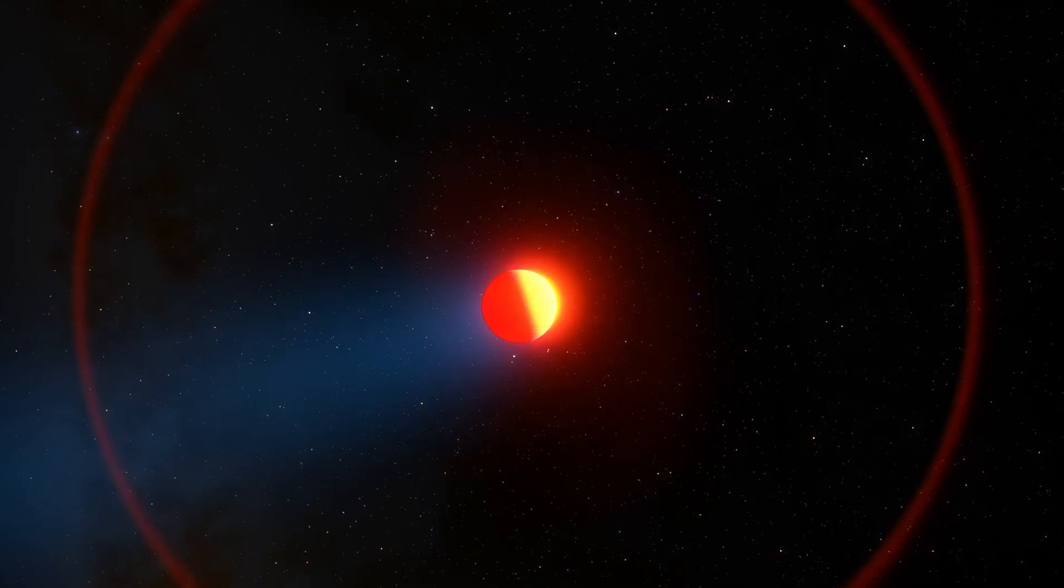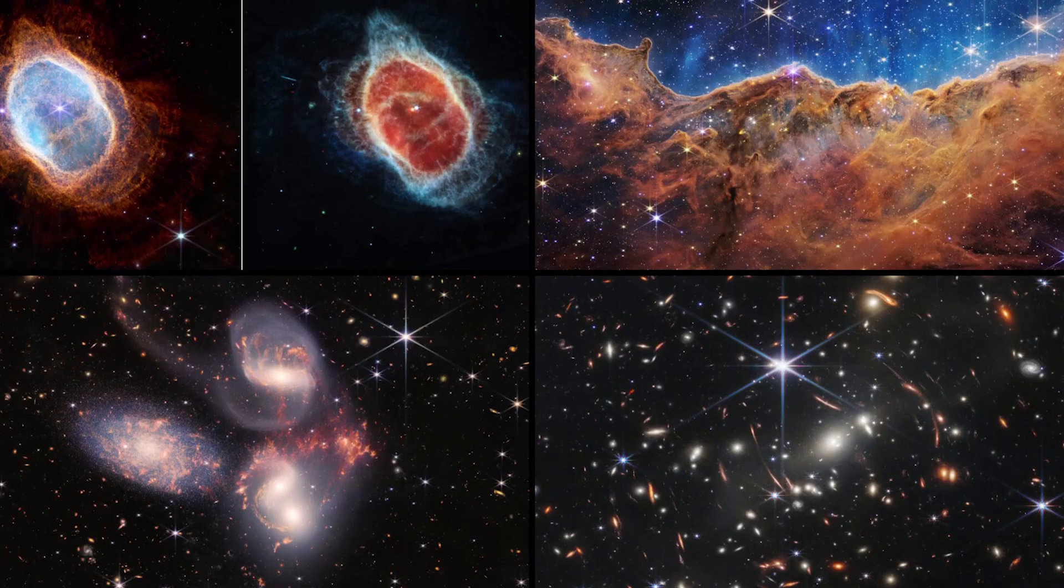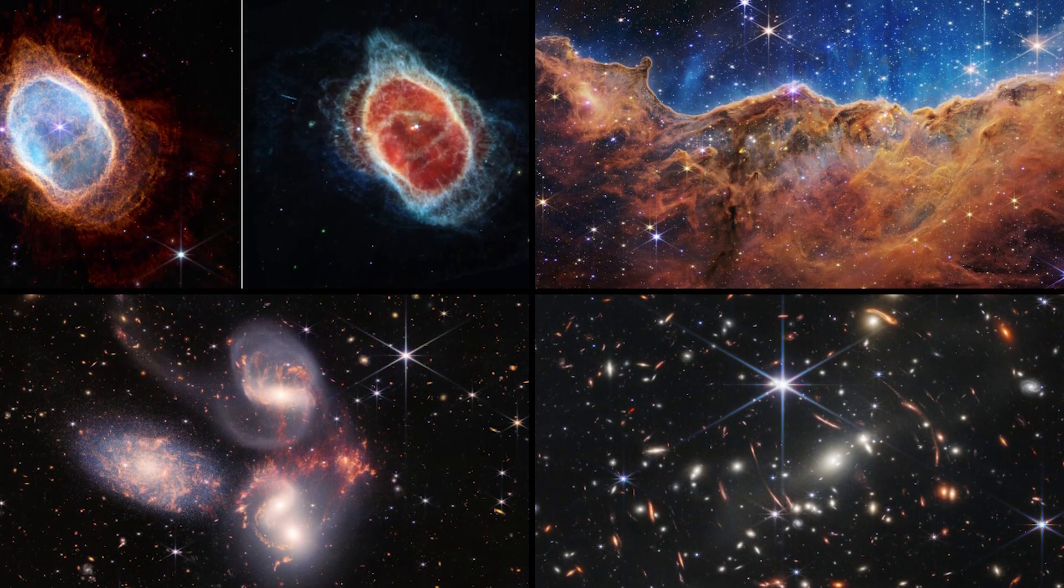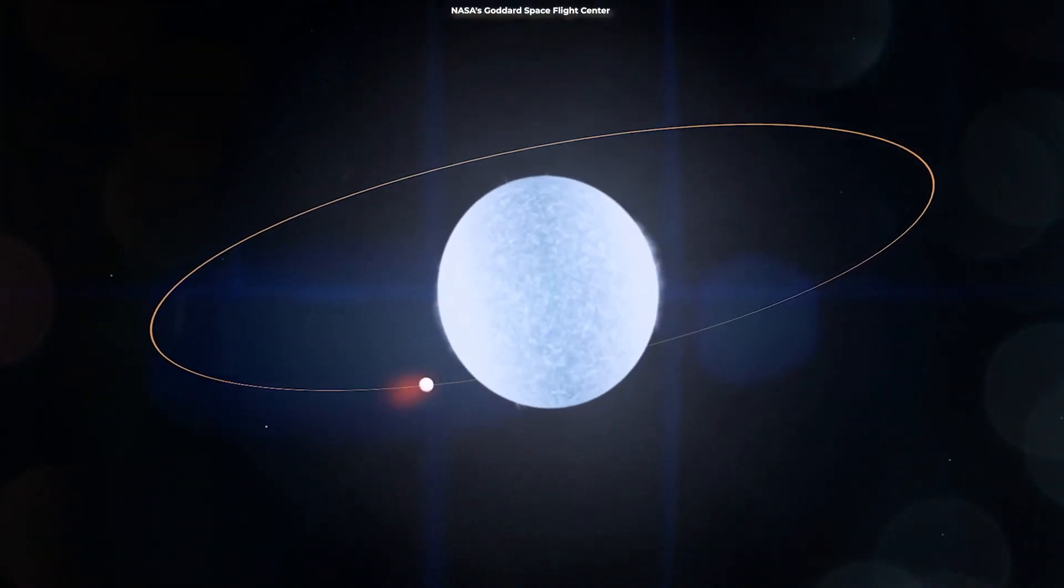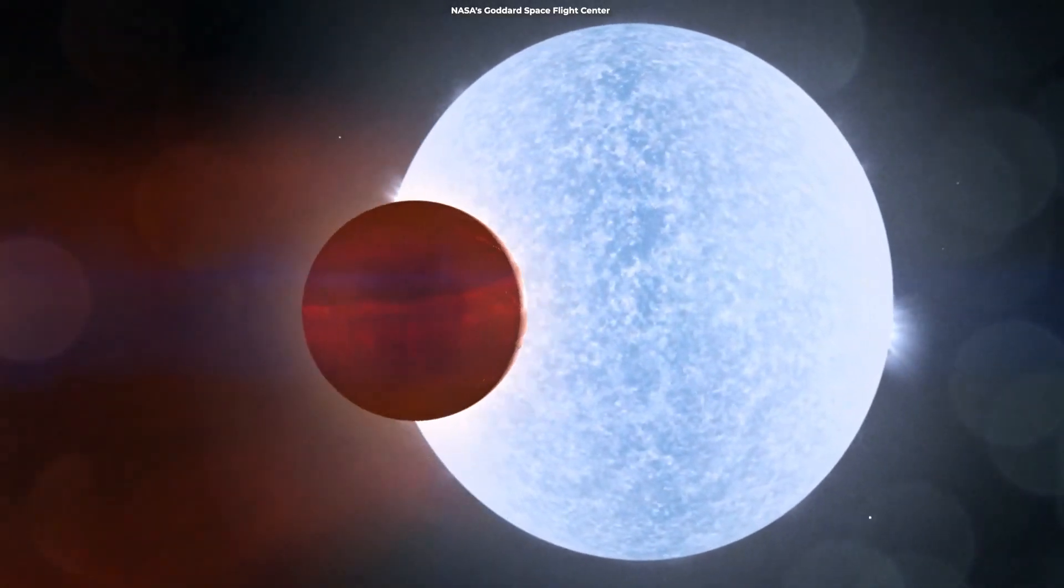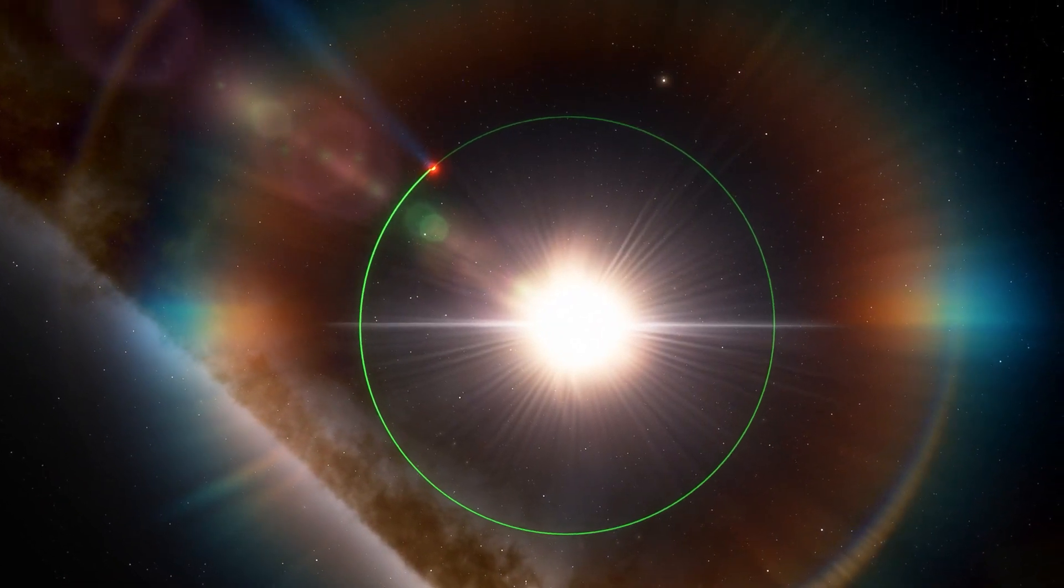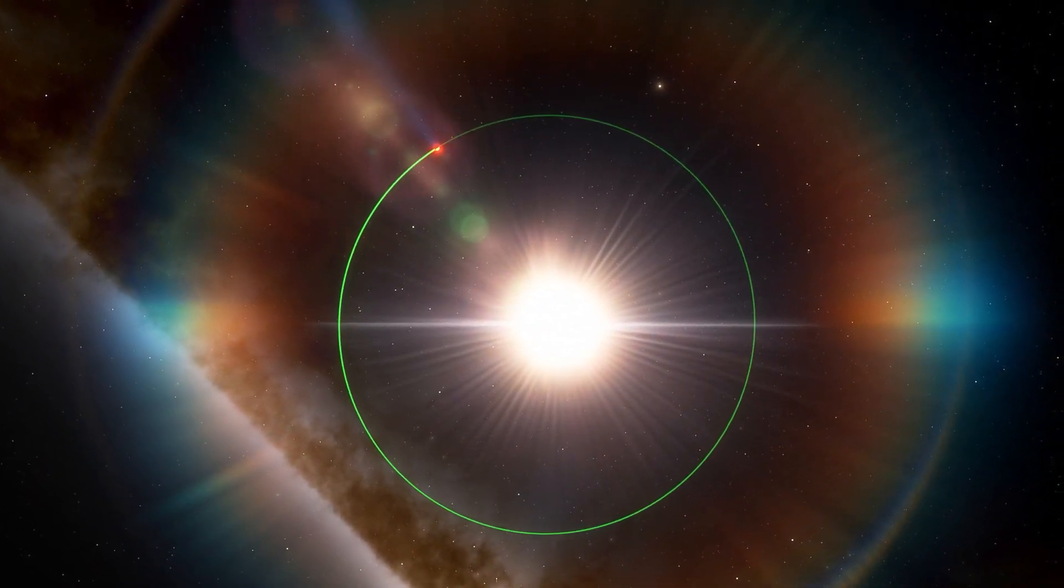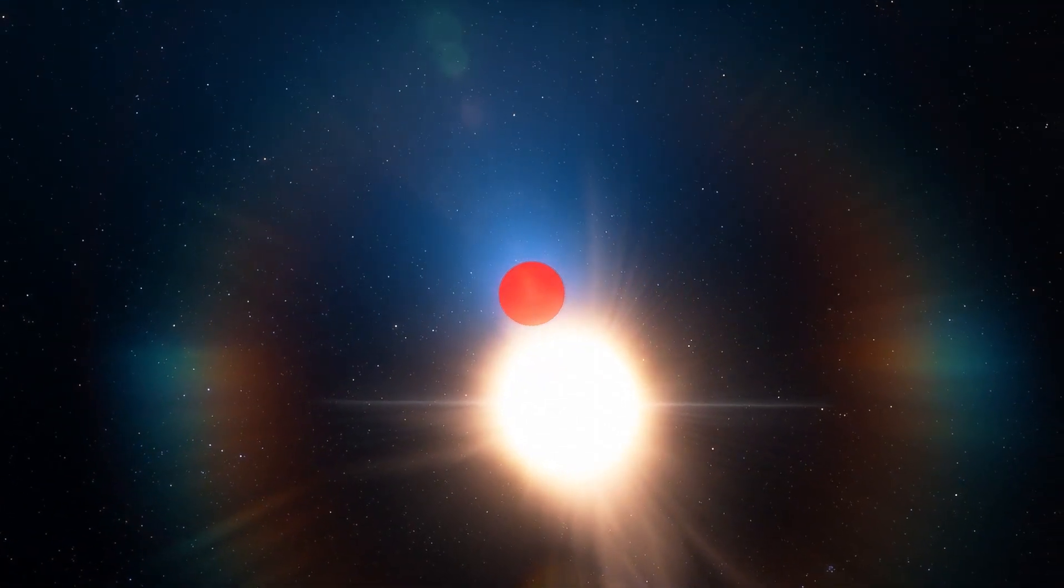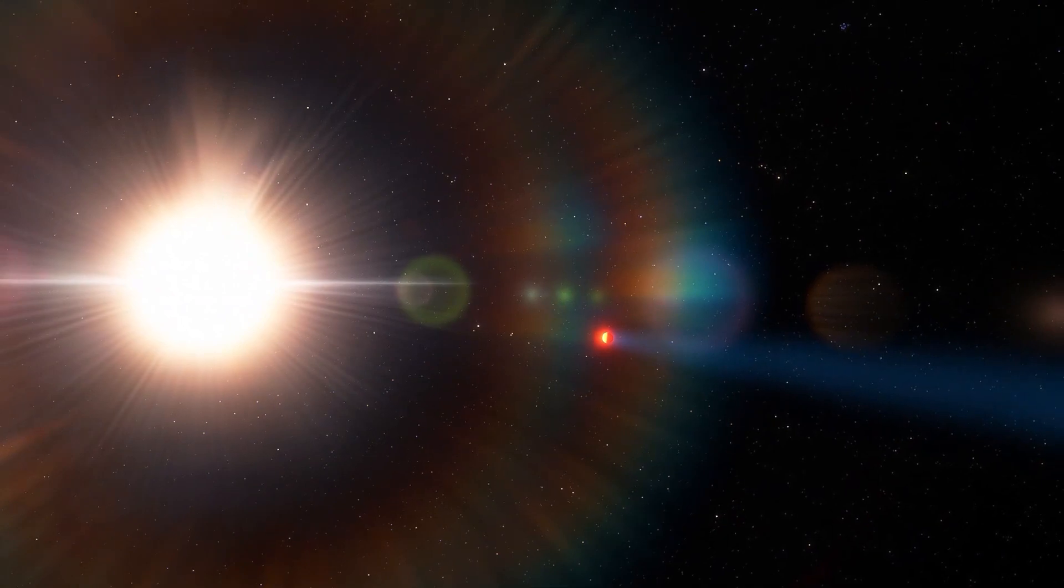Back when it was first discovered, WASP-96b was originally thought to be a cloudless planet. However, when NASA released the images captured by the JWST of the planet's atmosphere, it revealed something much more exciting. Specifically, their analysis revealed that the once cloudless planet is not so cloudless after all. They were able to detect signs of clouds and water vapor on WASP-96b, and this has led to confusion among scientists due to their contradicting data that the planet was entirely cloudless.